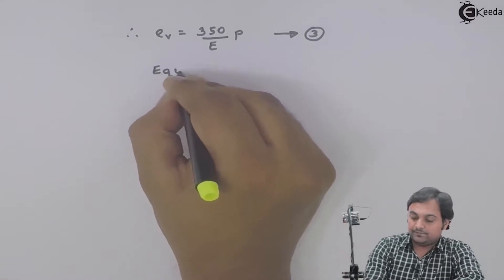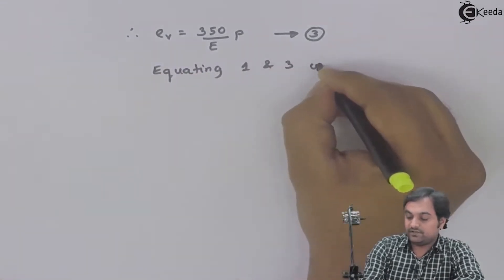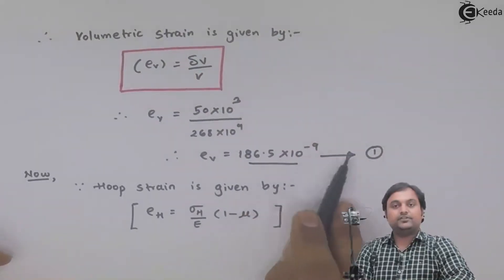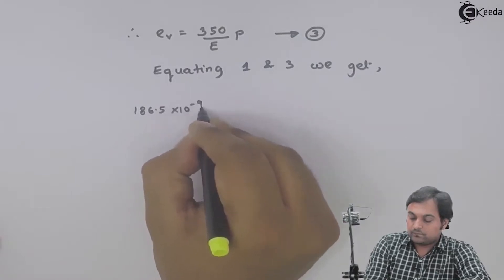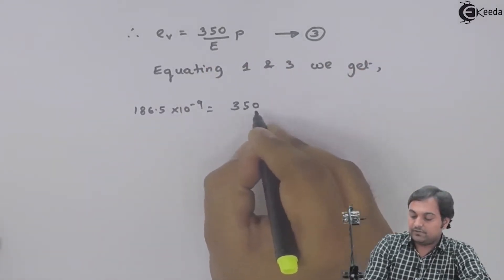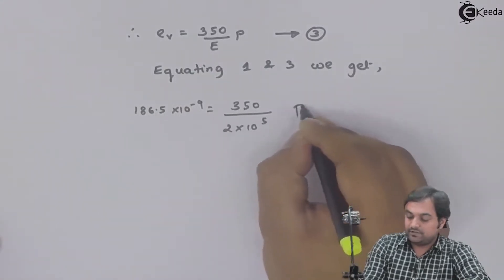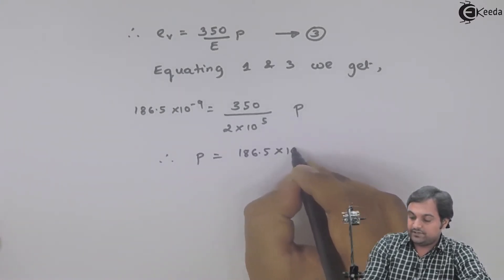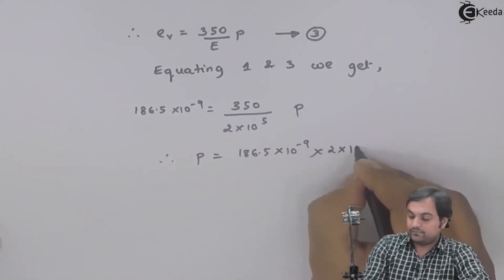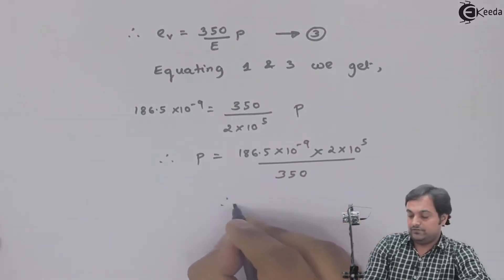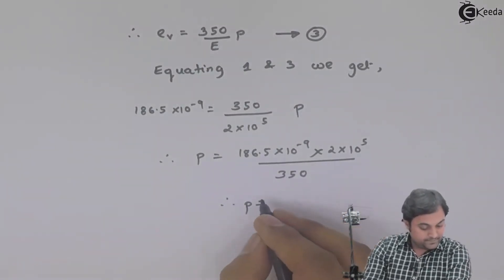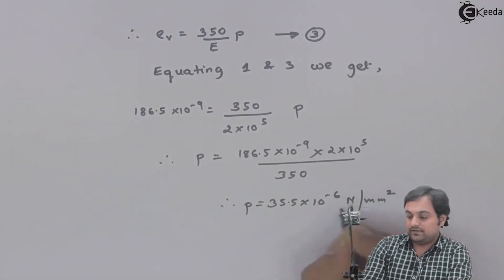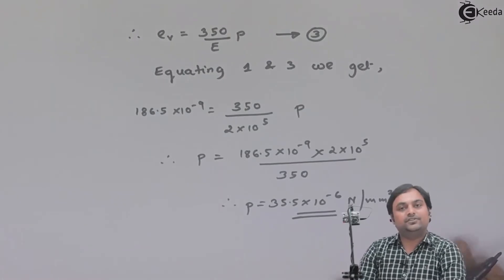Equating Equation 1 and Equation 3: from Equation 1, volumetric strain = 186.5×10⁻⁹; from Equation 3, eᵥ = 350 / (2×10⁵) × P. Therefore P = 186.5×10⁻⁹ × 2×10⁵ / 350. So internal pressure P = 35.5×10⁻⁶ N/mm². This was what was asked in the question, and with this we complete the problem.